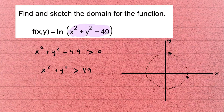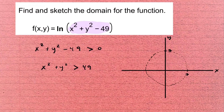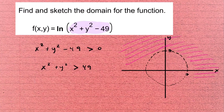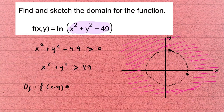So we shade everything outside the circle — that entire exterior region is the domain. Writing it formally: the domain of f is the set of points (x, y) in ℝ² such that x² + y² > 49.